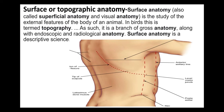Surface or topographic anatomy — surface anatomy, also called superficial anatomy or visual anatomy, is the study of the external features of the body of an animal or human. In birds, this is termed topography, while in humans it is called surface anatomy. It is a branch of gross anatomy along with endoscopy and radiological anatomy. Surface anatomy is a descriptive science.